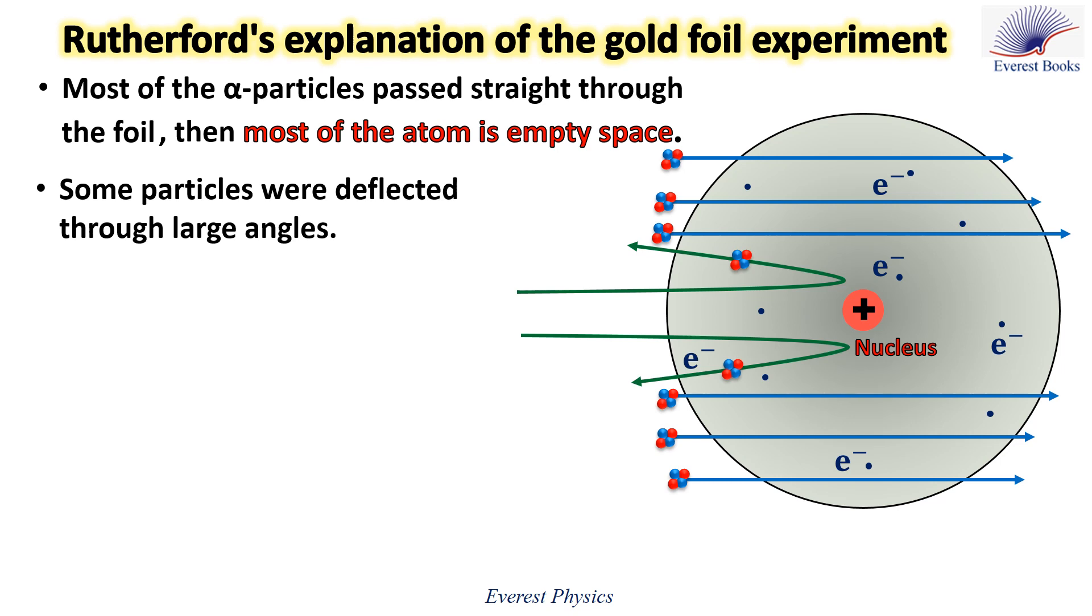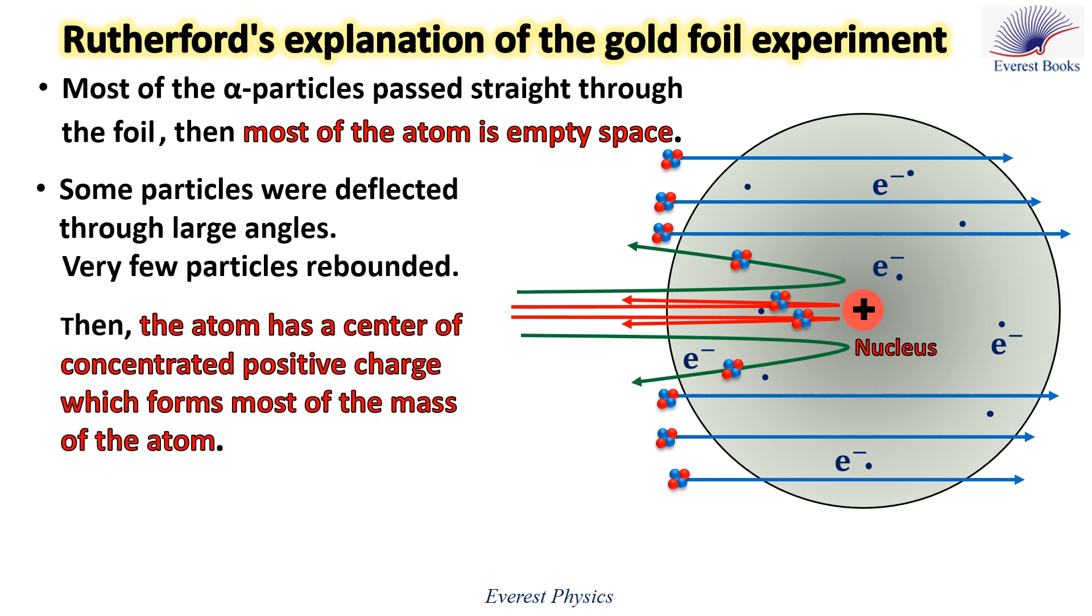In the experiment, some particles were deflected through large angles, like the ones whose paths are represented by green arrows. Very few particles rebounded, like the ones whose paths are represented by red arrows. Rutherford concluded that the atom has a center of concentrated positive charge, which forms most of the mass of the atom. Rutherford called this center atomic nucleus.